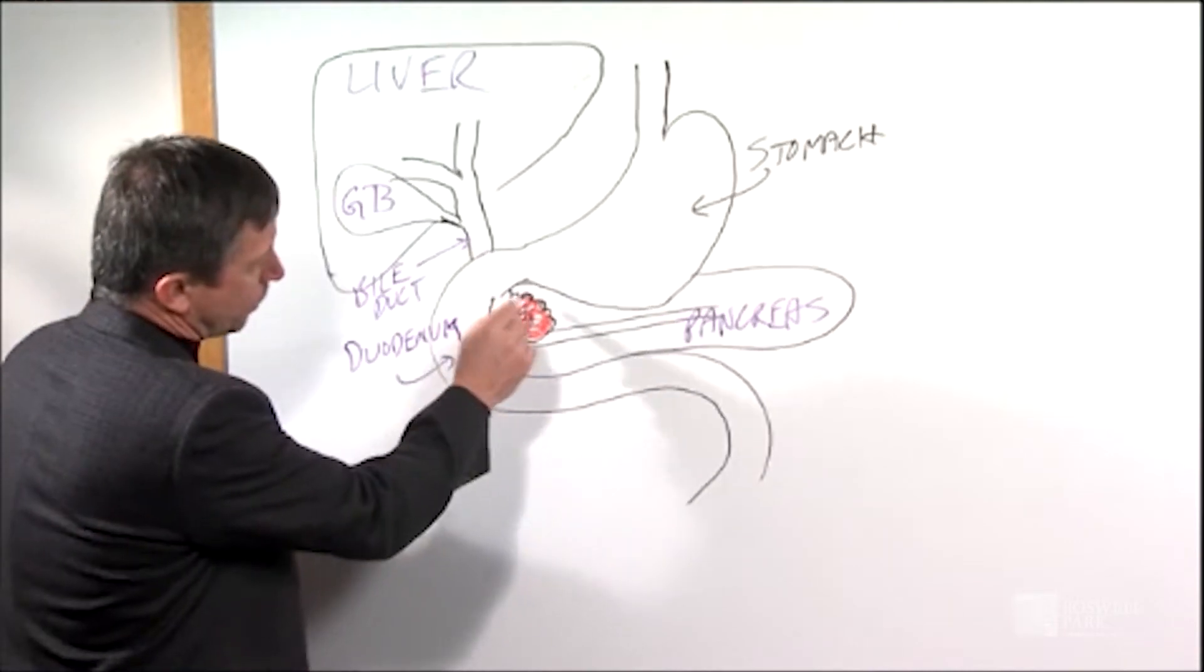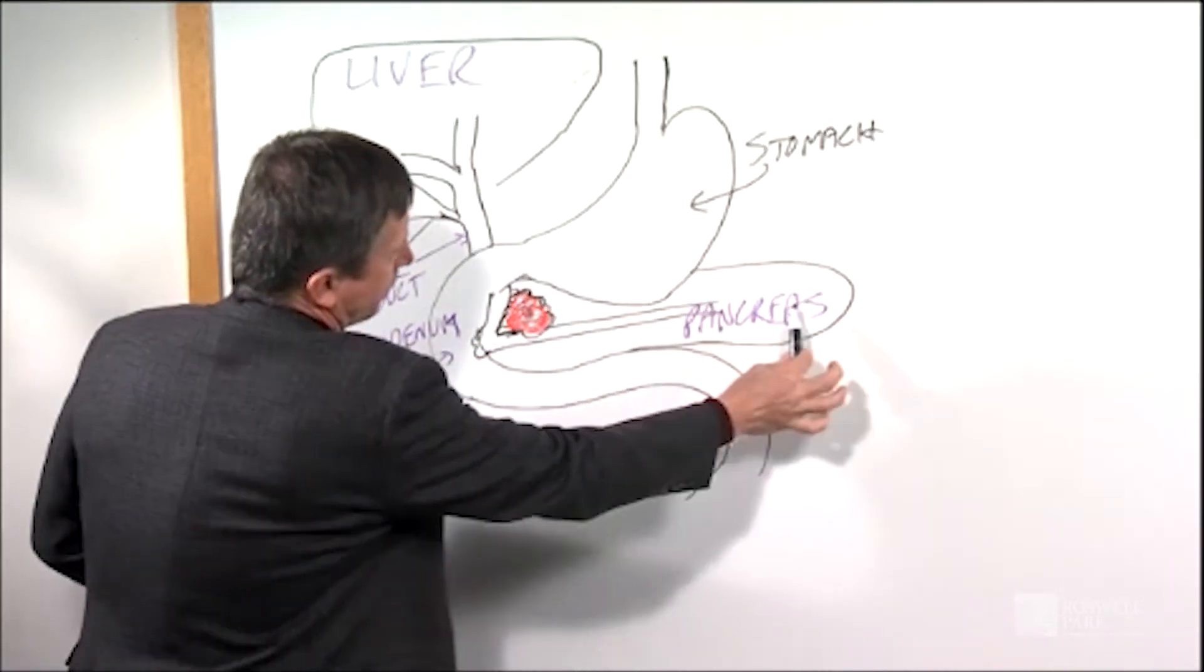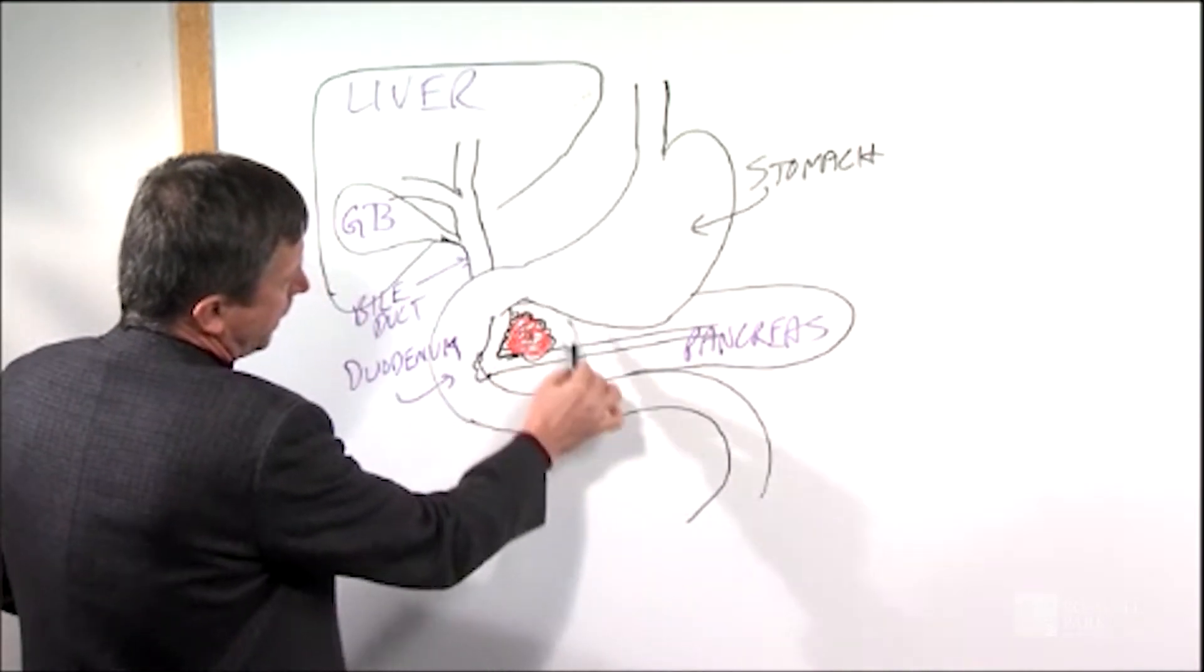Now in this example we're talking about a tumor in the head of the pancreas. This is the pancreas, the tail of the pancreas, the neck and body of the pancreas, and the head of the pancreas.